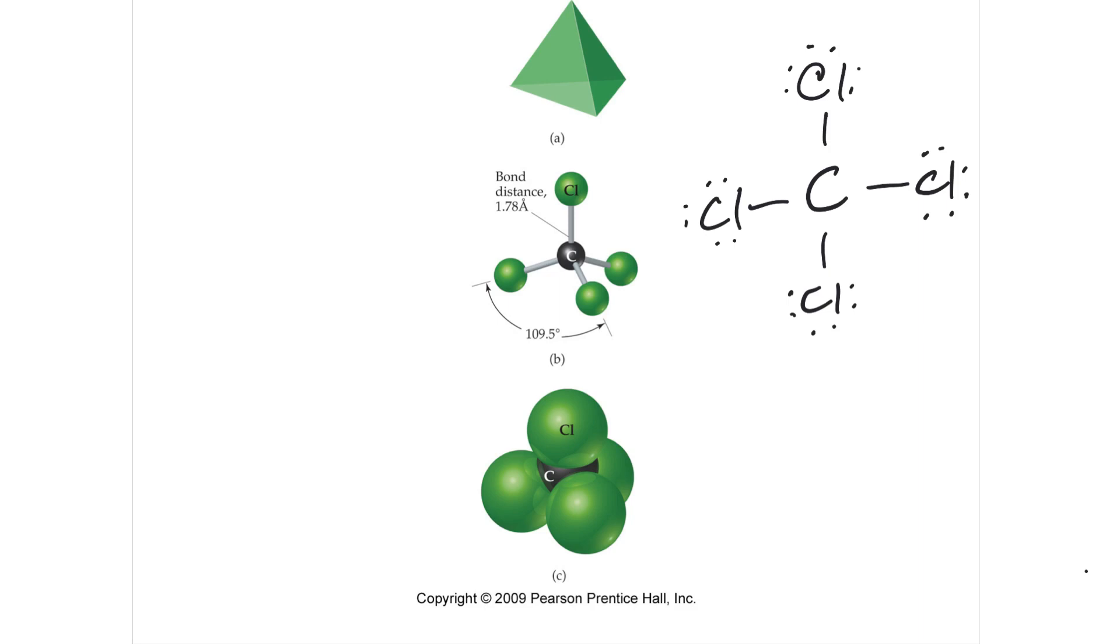So the Lewis dot gives you tons of information, but it doesn't give you what you really need, and that is its three-dimensional shape and size.